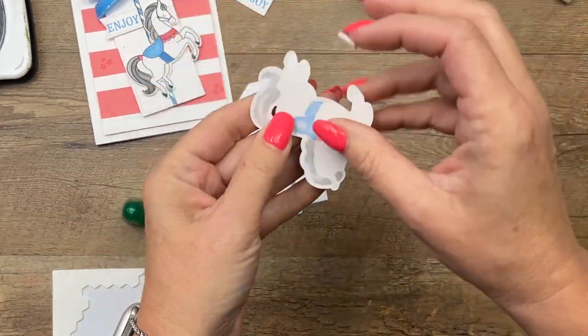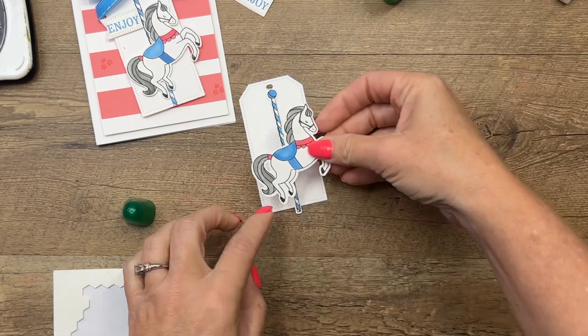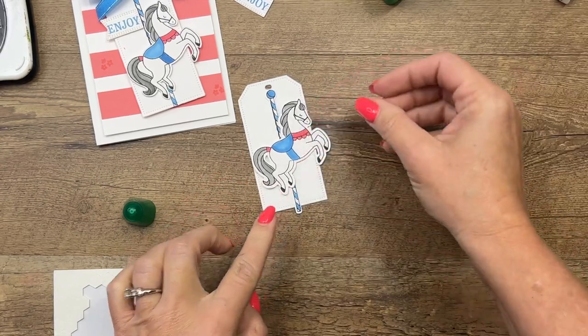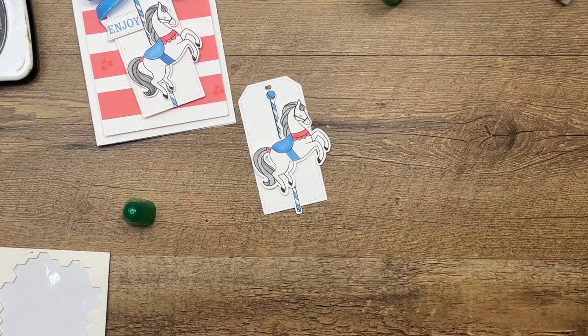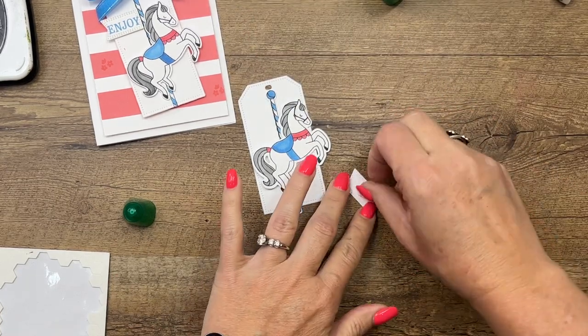One thing I do remember, I made these a while ago, these swap cards, is that the pole is too long for the tag. So you can see I went down below, so we'll snip that off there at the end. We're going to put our horse right there and then our 'enjoy' with a dimensional also.